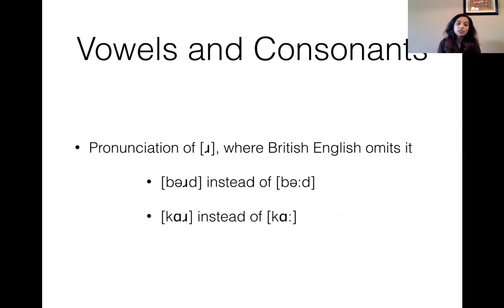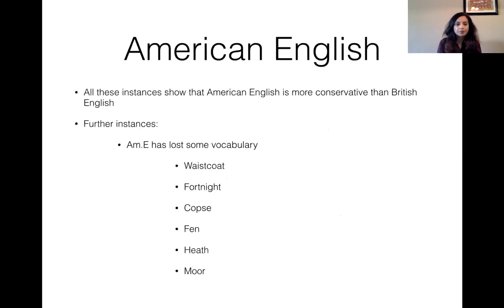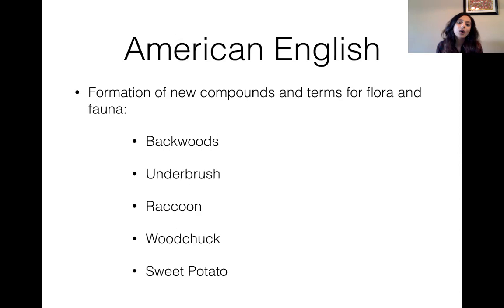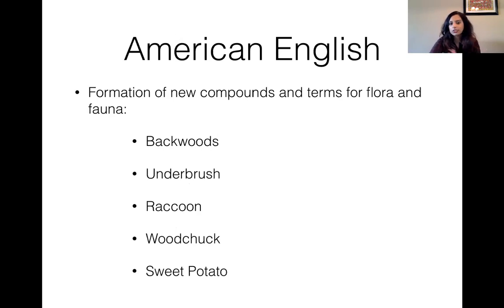Another difference is the pronunciation of the R. In American English, you always roll your R — you say 'bird' with a full R, instead of 'buhd' in British English, or 'car' instead of 'cah.' In many ways, American English is actually more conservative. We have lost some vocabulary like 'waistcoat,' 'fortnight,' 'copse,' 'fen,' and 'heath.' But we also have new compounds in terms of flora and fauna — like 'underbush,' 'raccoon,' 'woodchuck,' and 'sweet potato' — many of which are borrowed from native Indian languages. British English does not have any of these.